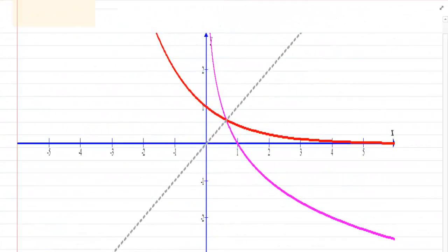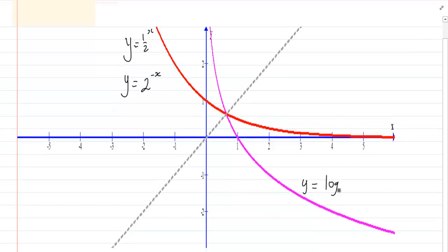If you look at this one, y is equal to half to the power of x. Or you could say y is equal to 2 to the power of minus x. And then the purple one representing the log graph is y is equal to log. Your base is still 2 and minus x. Or you could write it as y is equal to log. Your base is half and x.